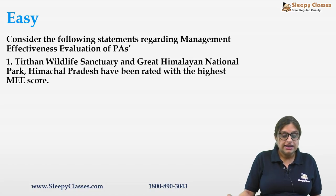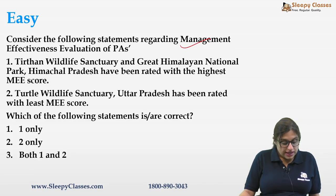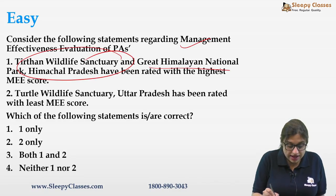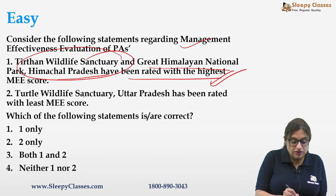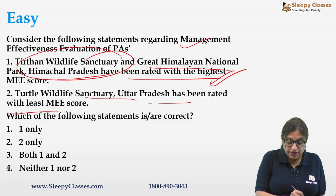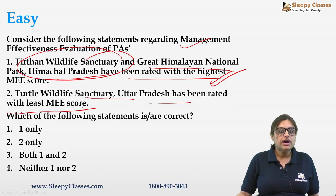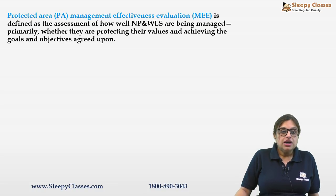The next question is regarding Management Effectiveness Evaluation (MEE) of protected areas. You are given two statements: Teethan Wildlife Sanctuary and Great Himalayan National Park, Himachal Pradesh have been rated with the highest MEE score, while Turtle Wildlife Sanctuary, Uttar Pradesh has been rated with the least MEE score. The correct answer is both — both statements are correct.